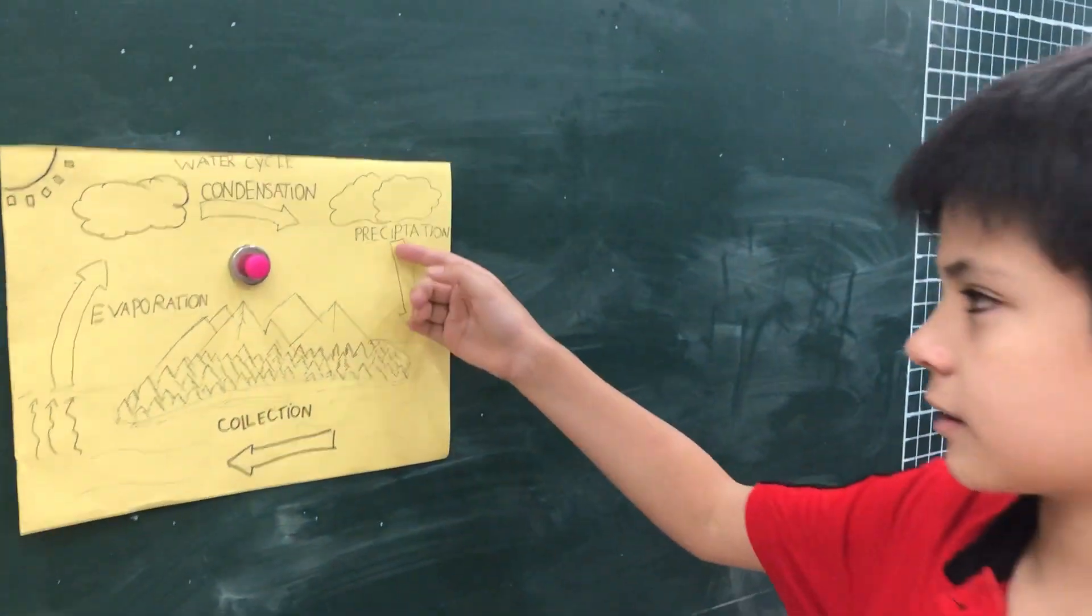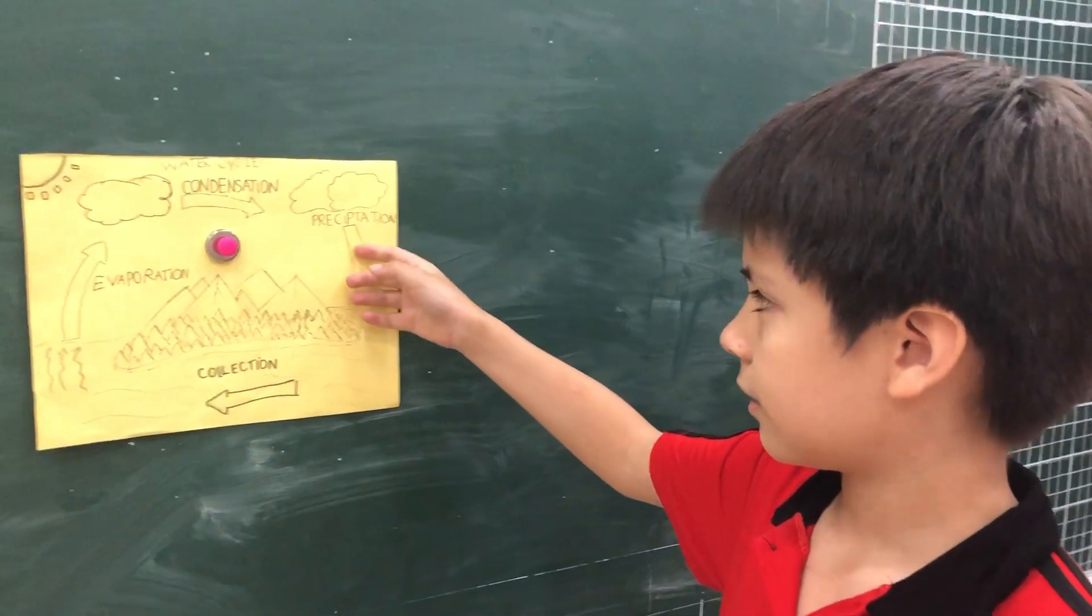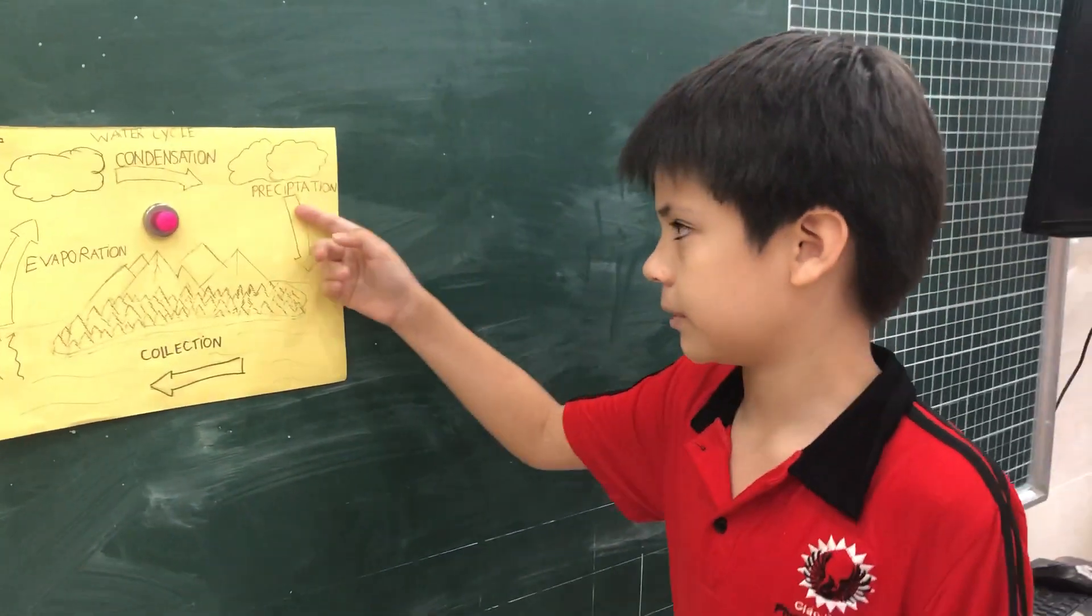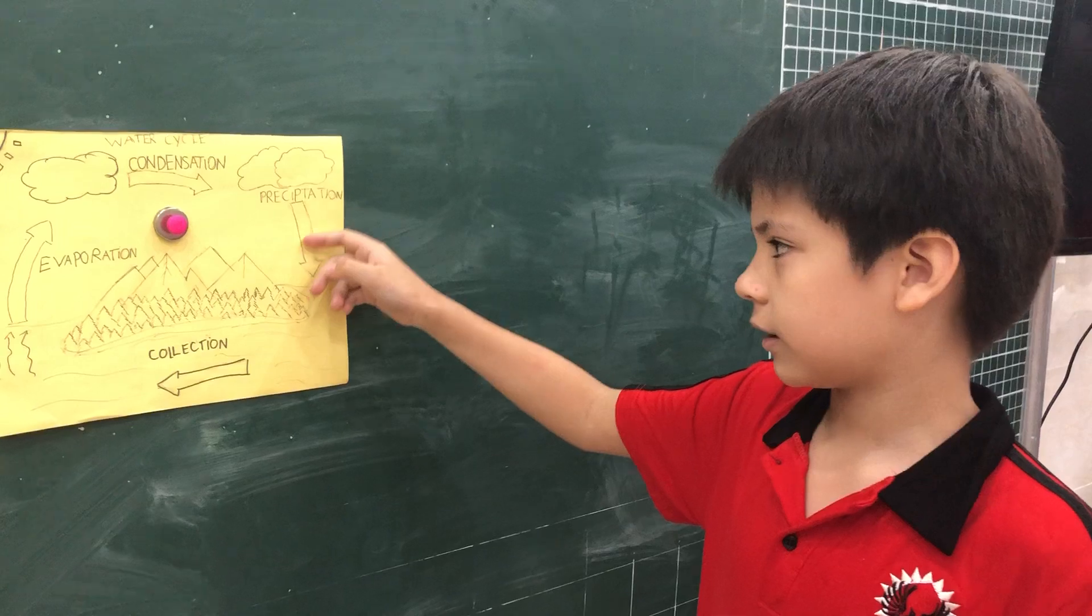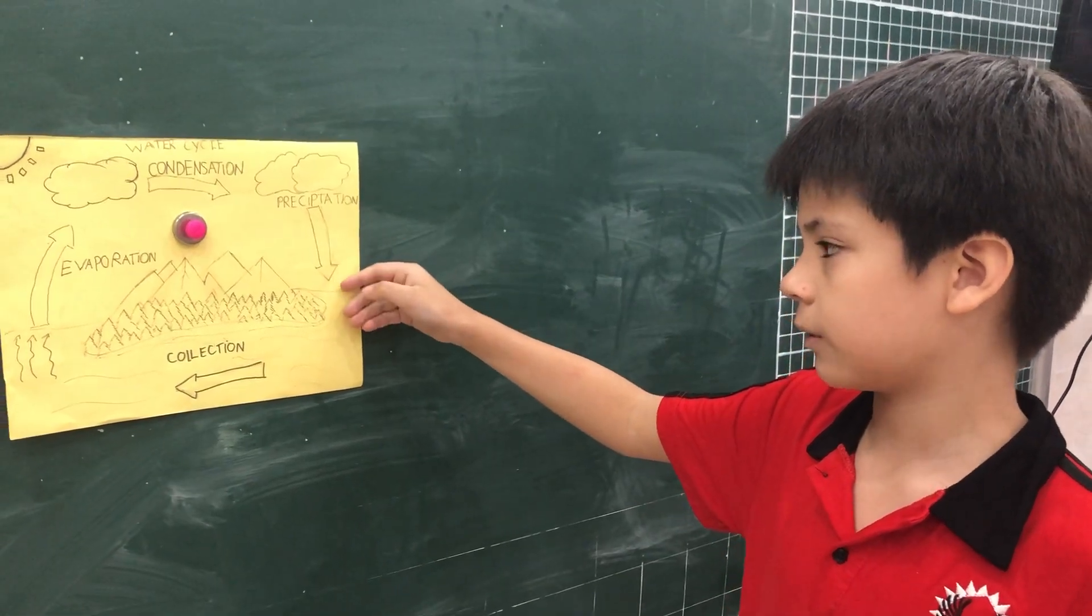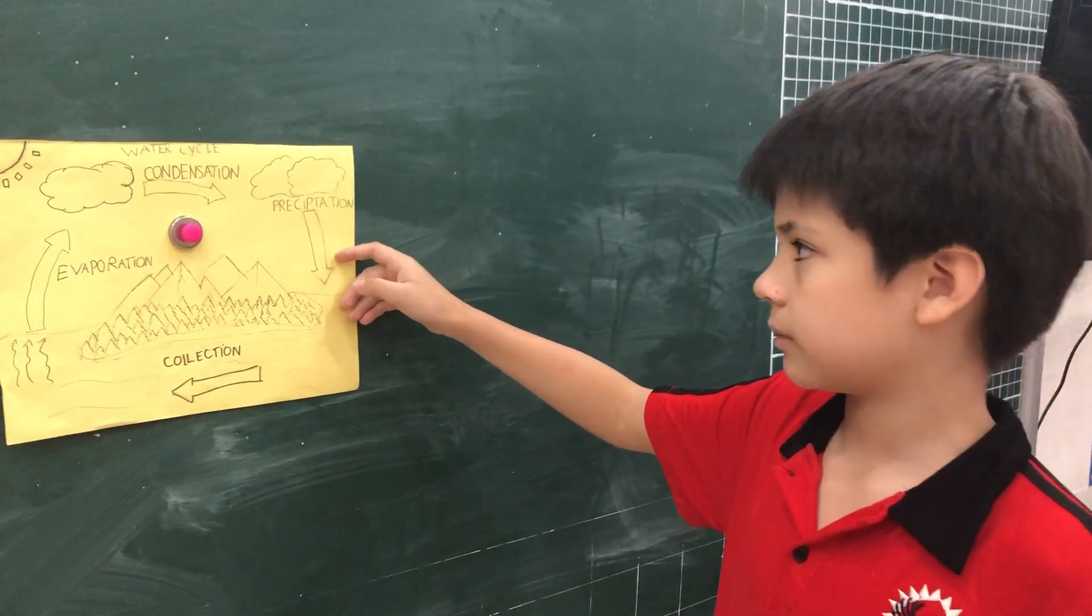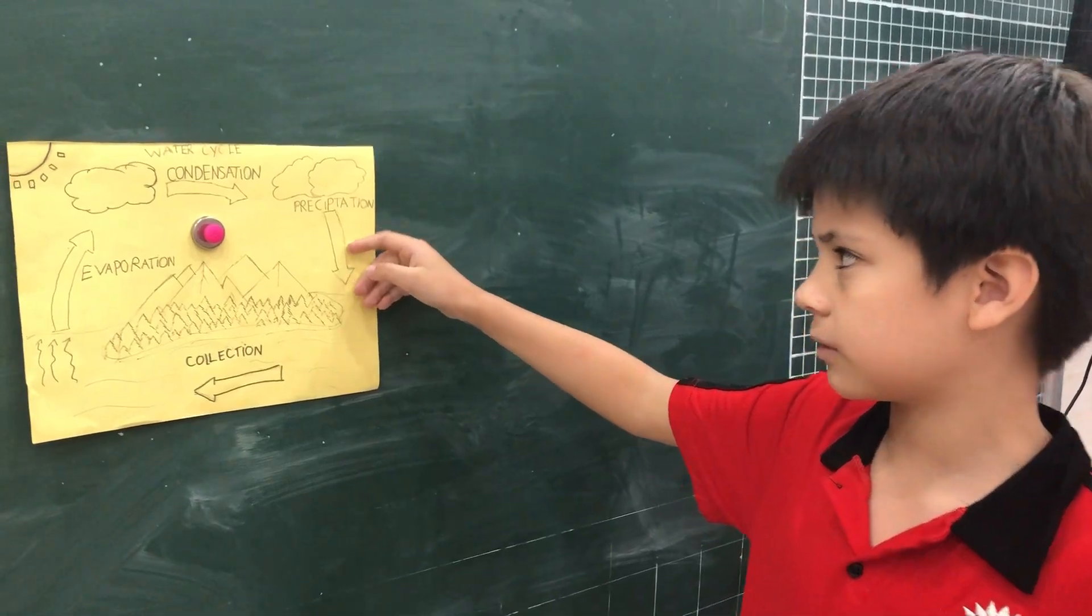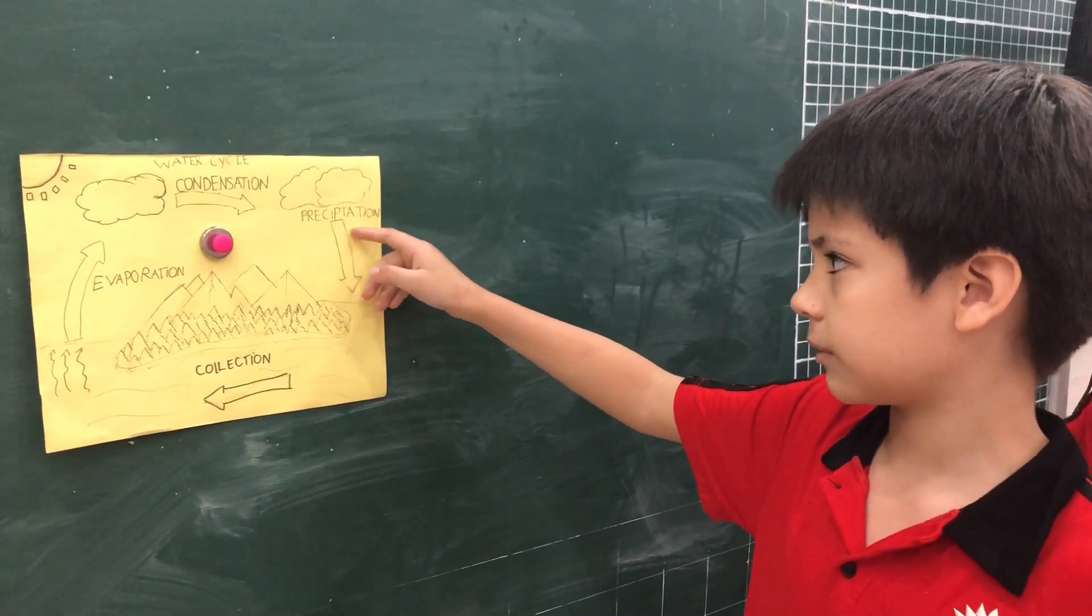When the cloud is too heavy and can't hold any more water vapor, it falls as rain, snow, or hail. This falls down to the ground, and this process is called precipitation.